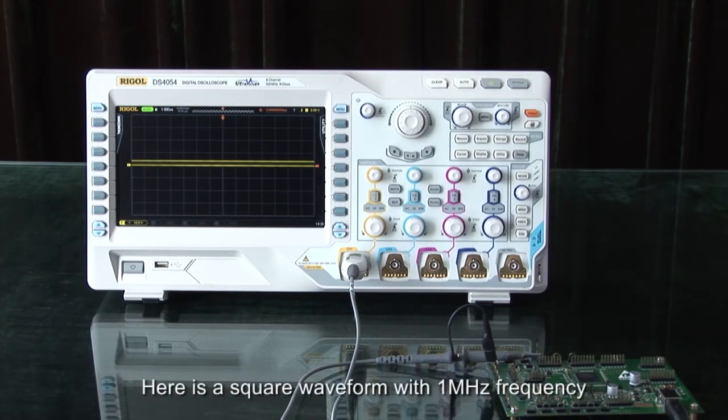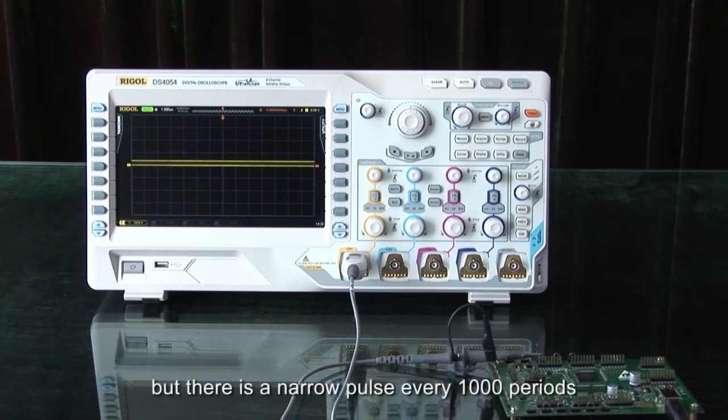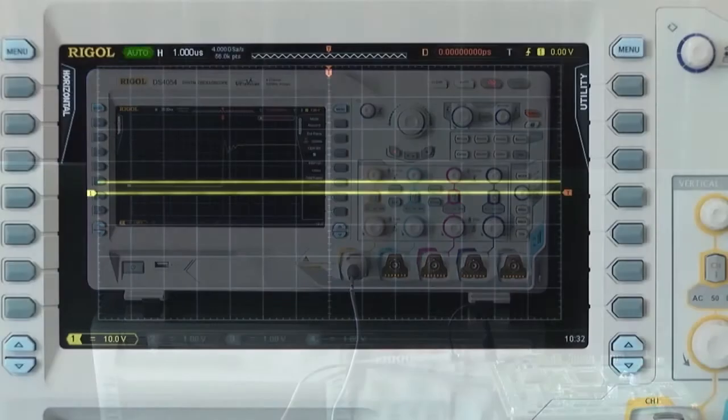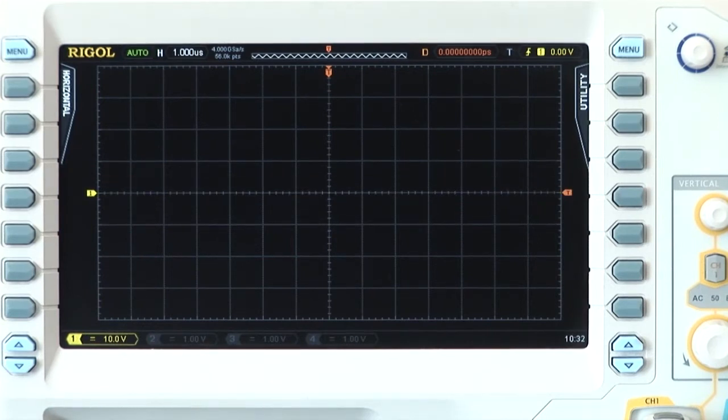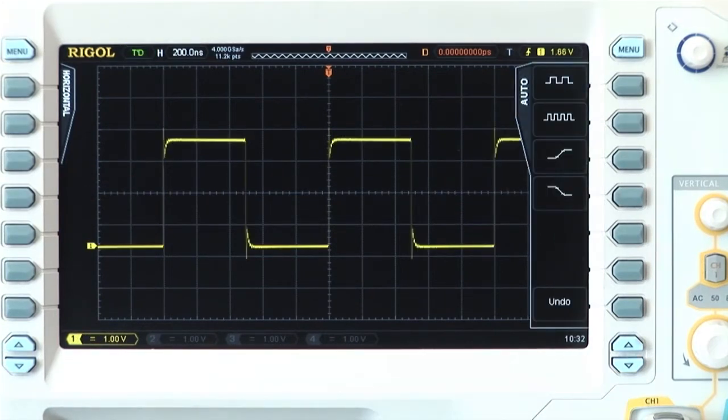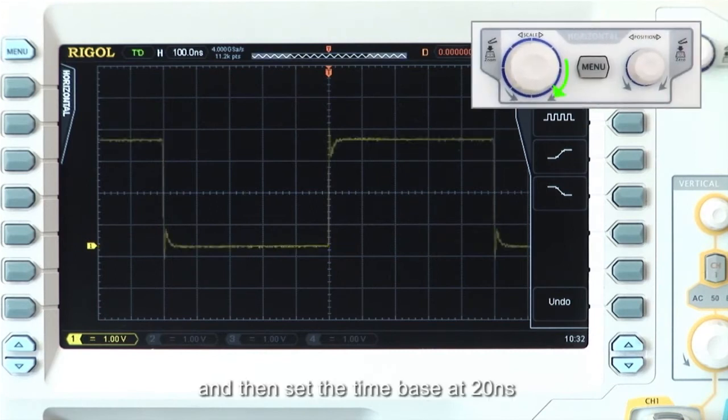Here is a square waveform with 1 MHz frequency, but there is a narrow pulse every 1000 periods. Let's connect this signal to channel 1. Press Auto and set the time base to 20 ns.